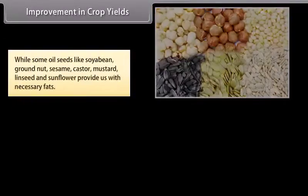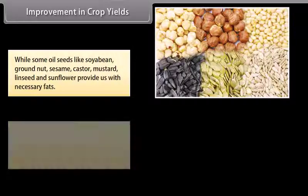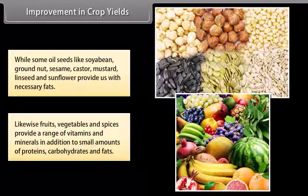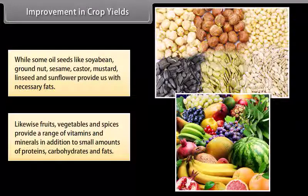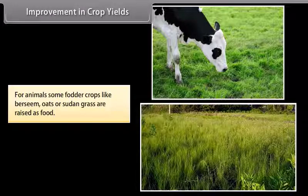Some oil seeds like soybean, groundnut, sesame, castor, mustard, linseed and sunflower provide us with necessary fats. Likewise, fruits, vegetables and spices provide a range of vitamins and minerals, in addition to small amounts of proteins, carbohydrates and fats. For animals, some fodder crops like berseem, oats or sudan grass are raised as food.